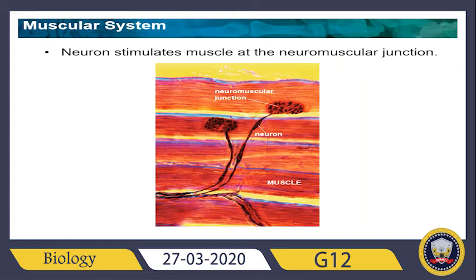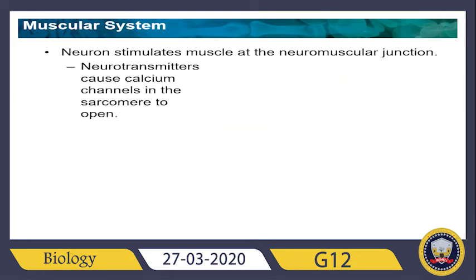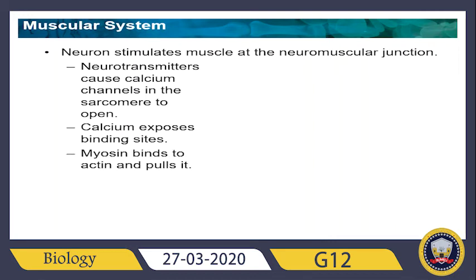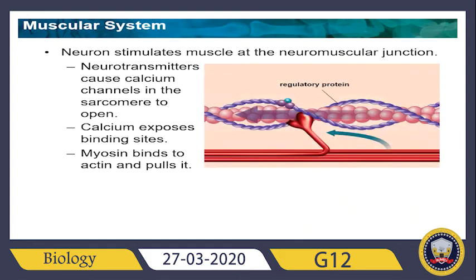Think of the neuromuscular junction like a communication center — in a school, a company, or a state — it receives the data and then releases it. In the body, releasing that data means causing movement. Neurotransmitters cause calcium channels in the sarcomere to open. The calcium then exposes binding sites, myosin binds to actin, and pulls it.